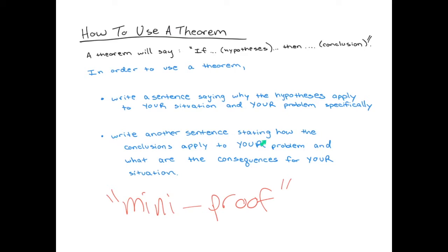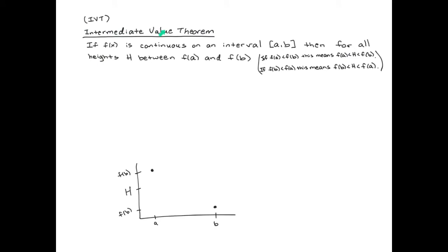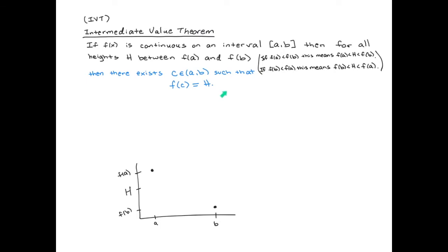The second step is to write another sentence stating how the conclusions apply to your problem — specifically, what are the consequences of the theorem's conclusions for your particular situation. The first theorem is the Intermediate Value Theorem. It says: if the function is continuous on a closed interval [a, b] with a and b included, then for all heights in between f(a) and f(b), there exists some x = c value in between a and b — where c ≠ a and c ≠ b — such that f(c) = h.